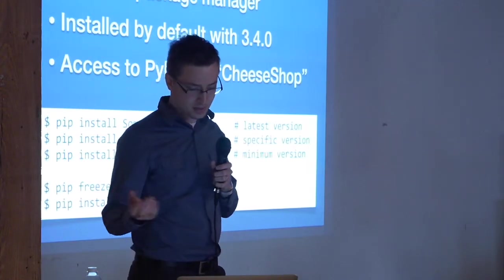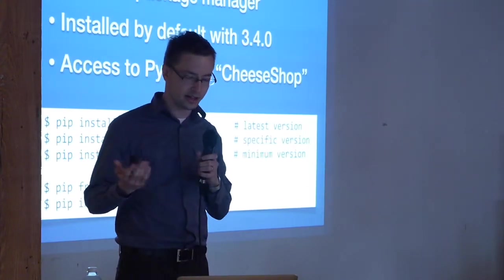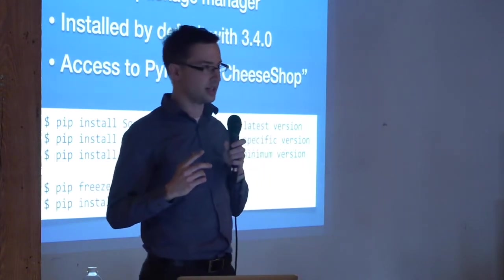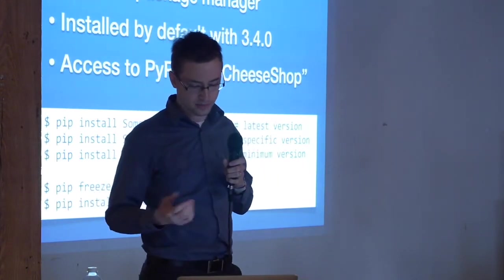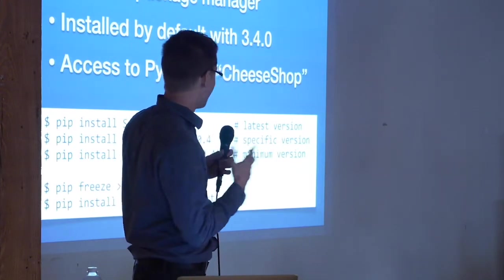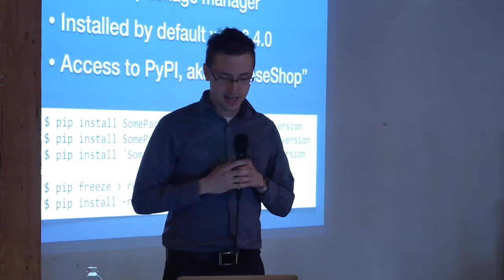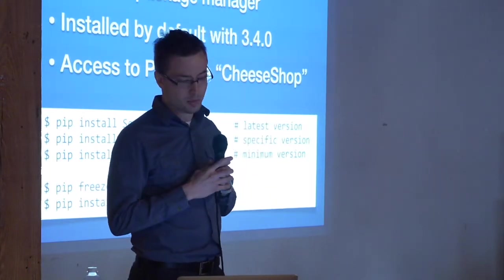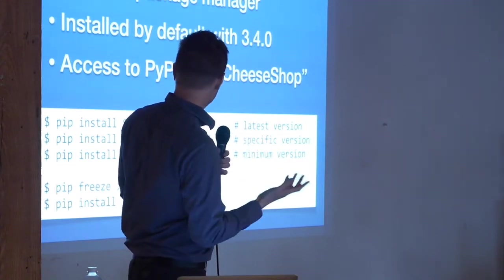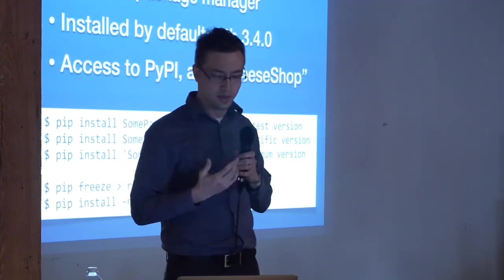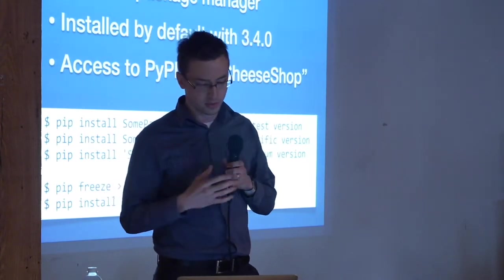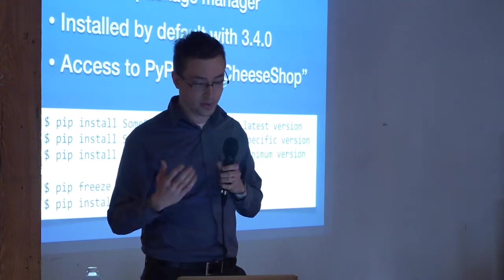So first, PIP, it's Python's package manager. It's equivalent to RubyGems. It's been around for a while, but this is the first version of Python where it's been installed by default. It's used to access PyPI, which is also known as the cheese shop. And that's where you can install packages. And these are just some commands that you would use to use PIP. You can use the freeze command to store whatever requirements your program needs and then later install it in a new environment.